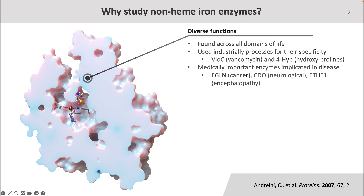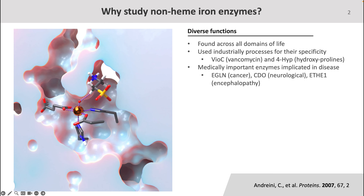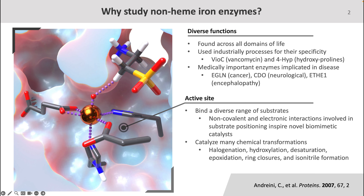Even more importantly, non-heme iron enzymes are implicated in a number of diseases. For example, EGLN is implicated in cancer, and the disease states of CDO and ETH1 can lead to neurological problems. However, in addition to these broader reasons for studying non-heme iron enzymes, we can also gain chemical insights by studying their active sites. Non-heme iron enzymes, as a class, can bind an impressive range of substrates through a finely tuned coordination of non-covalent interactions, which can teach us a lot about substrate positioning and substrate specificity.